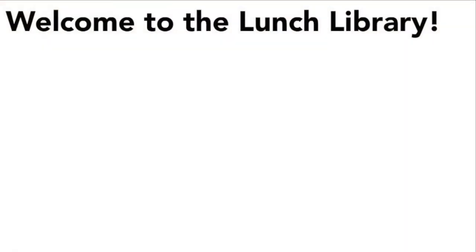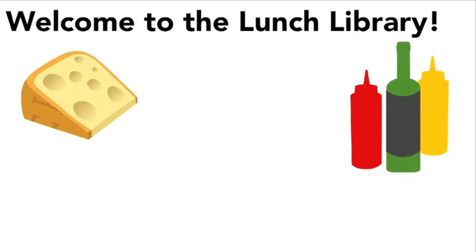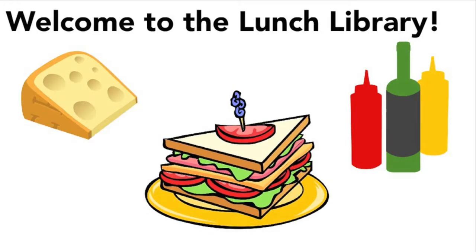If you're like me, you probably have internal names or acronyms for your departments, projects, and collections that might not totally be clear to someone outside your organization. This is especially relevant when you're designing your site's navigation. I'll give an example. The lunch library has three departments: the cheese department, the condiment department, and the sandwich department. The library might choose to organize its website based off of those three divisions.